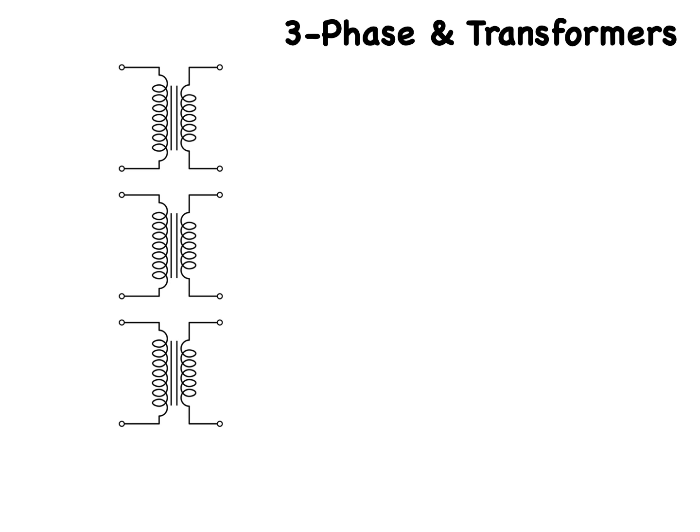Sometimes it is more efficient to have these three transformers on the same core, which is usually indicated like this. This does not change the fact that we still have three transformers that, until we make connections to them, are still independent of each other. We are interested here in how to interpret them on an electrical drawing. Transformers serve many functions; however, let's focus on their ability to step voltage up or down depending on where it is in the system. Power is always delivered to the primary side of the transformer and always delivered from the secondary.